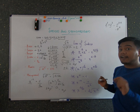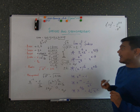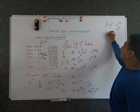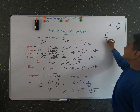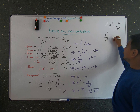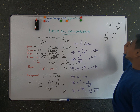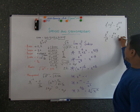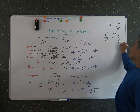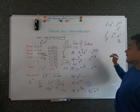The second law: when two numbers with the same base are divided, their index values are subtracted. For example, 2 raised to 5 divided by 2 raised to 4 gives 2 raised to 1, which is simply 2.